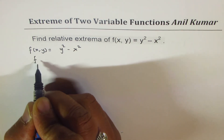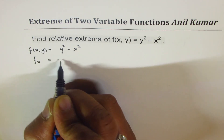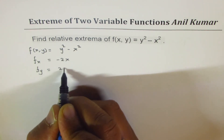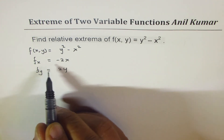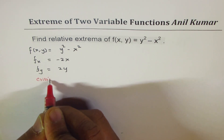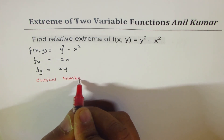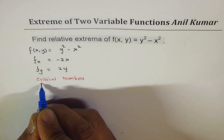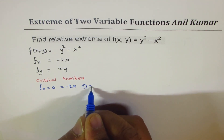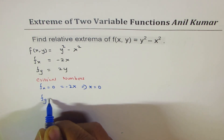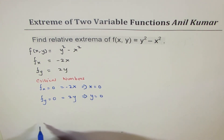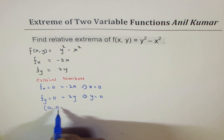The partial derivative with respect to x is -2x (the derivative of y² is 0), and the partial derivative with respect to y is 2y. Equating these to 0 to find critical numbers: -2x = 0 gives x = 0, and 2y = 0 gives y = 0. So the critical number is (0, 0).